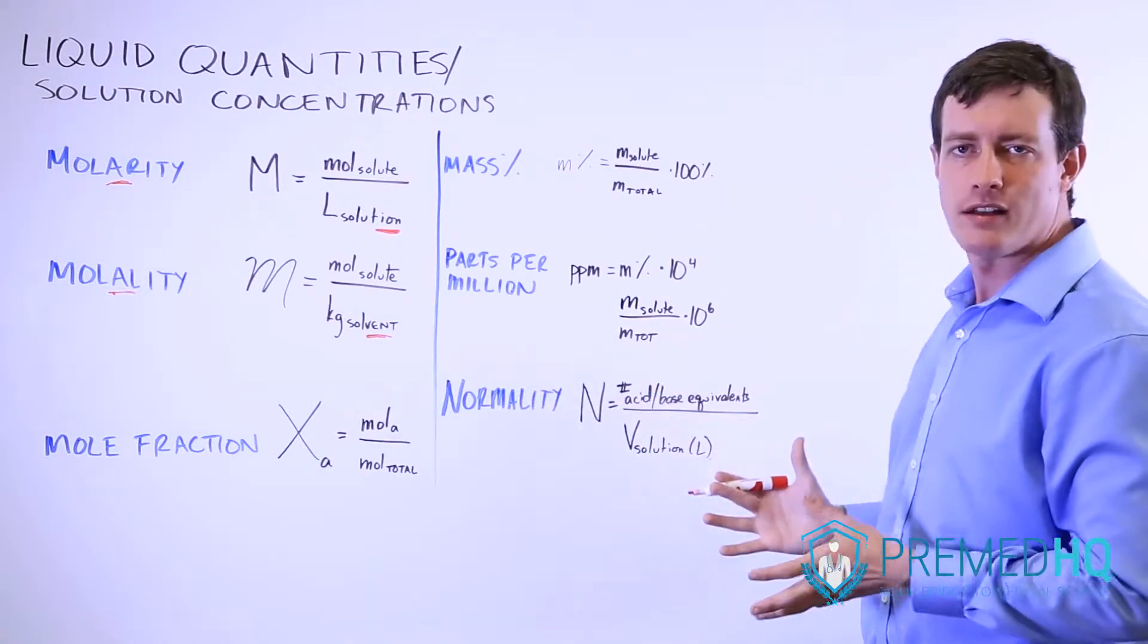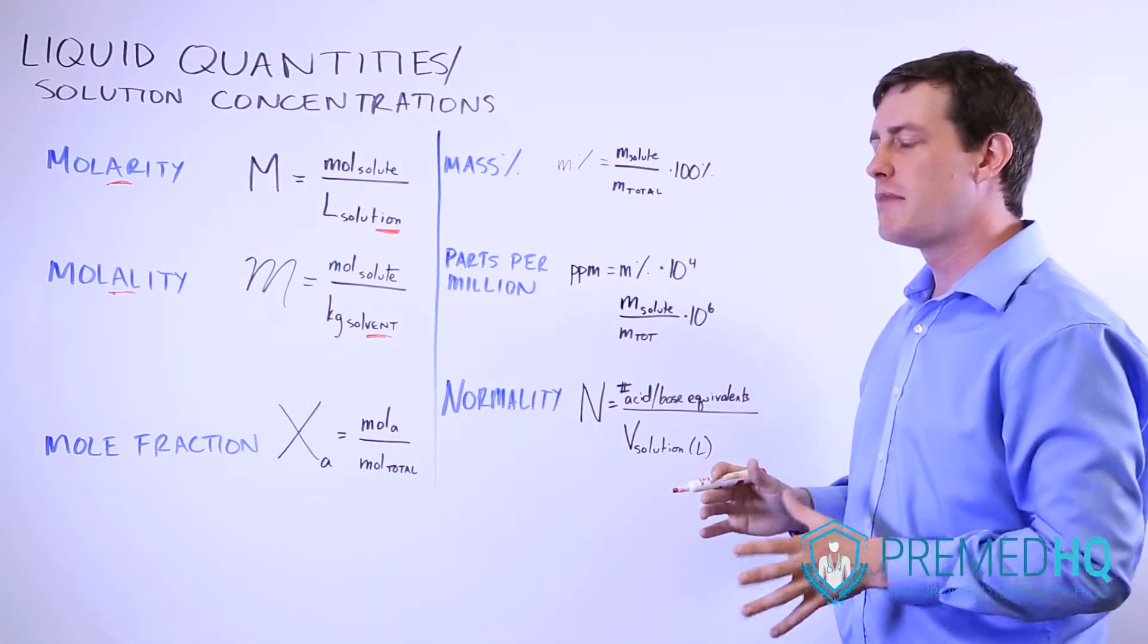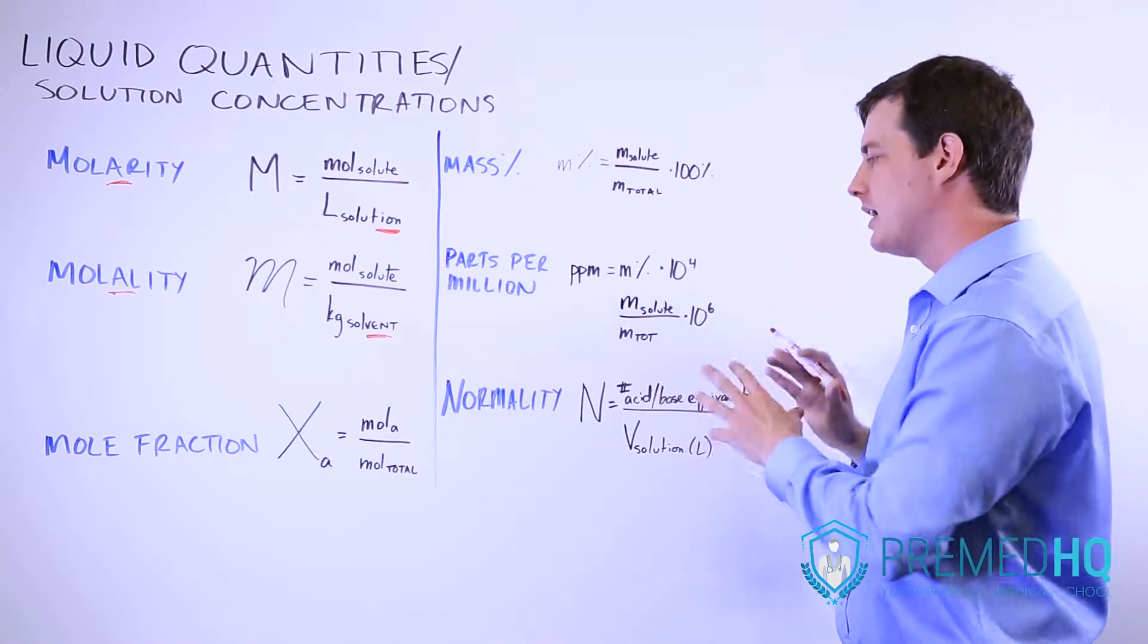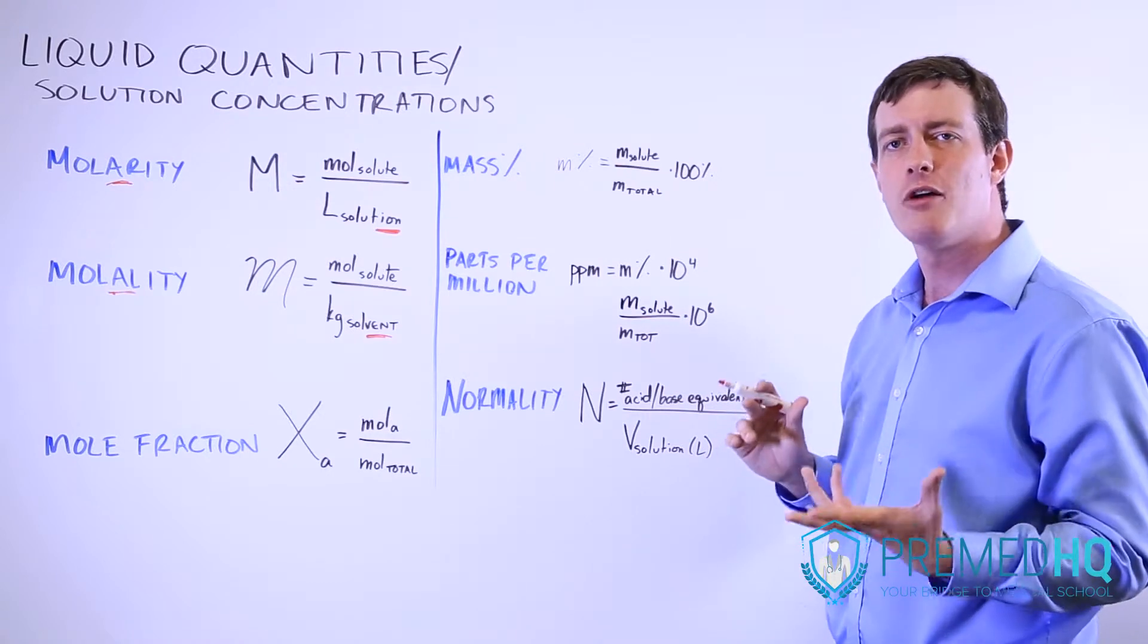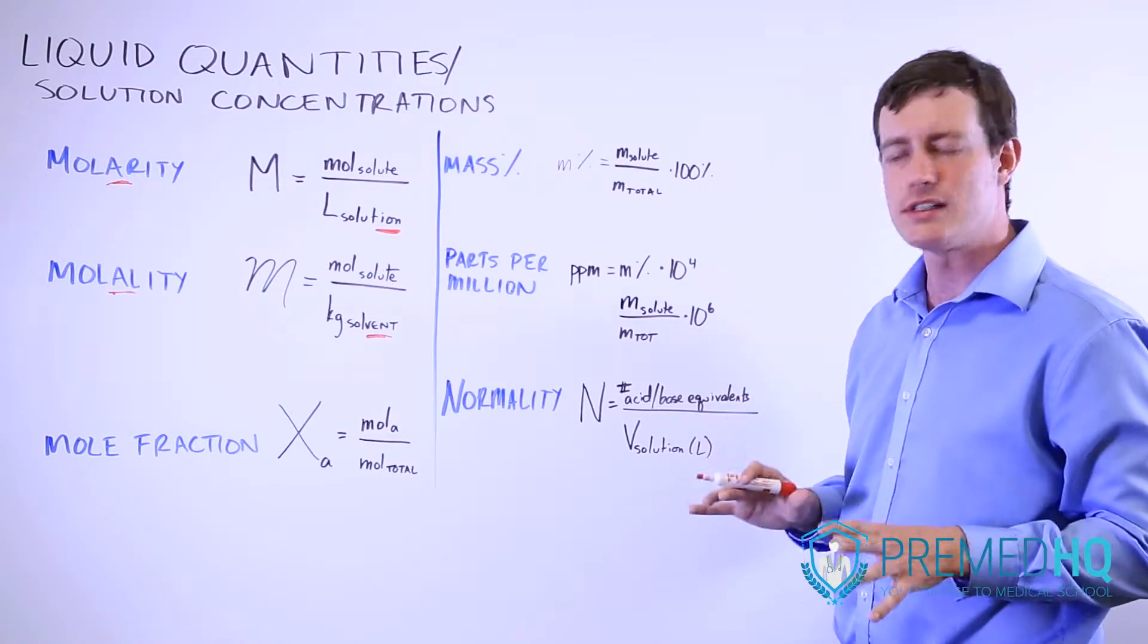And lastly we have normality. Normality is a measurement of the acidity or basicity of something, not on the pH scale but rather in terms of how many of the acid or base equivalents there are.